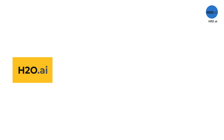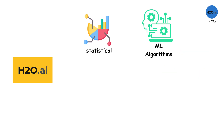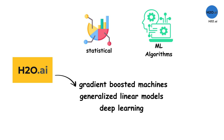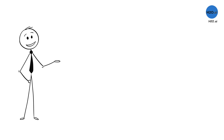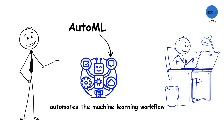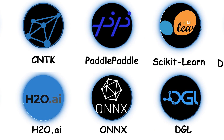H2O provides implementations of many statistical and machine learning algorithms, including gradient-boosted machines, generalized linear models, deep learning, and more. Its AutoML functionality automates the machine learning workflow, making it accessible even to non-experts.